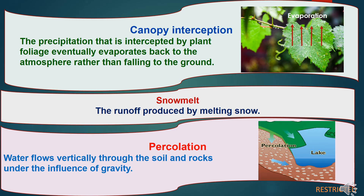Now we will discuss other components. Canopy interception: the precipitation that is intercepted by plant foliage eventually evaporates back to the atmosphere rather than falling to the ground — meaning whatever water falls on the leaf surface is evaporated without touching the soil surface. Snow melt: the runoff produced by melting of snow is called snow melt. Percolation: water flowing vertically through the soil and rocks under the influence of gravity is called percolation.